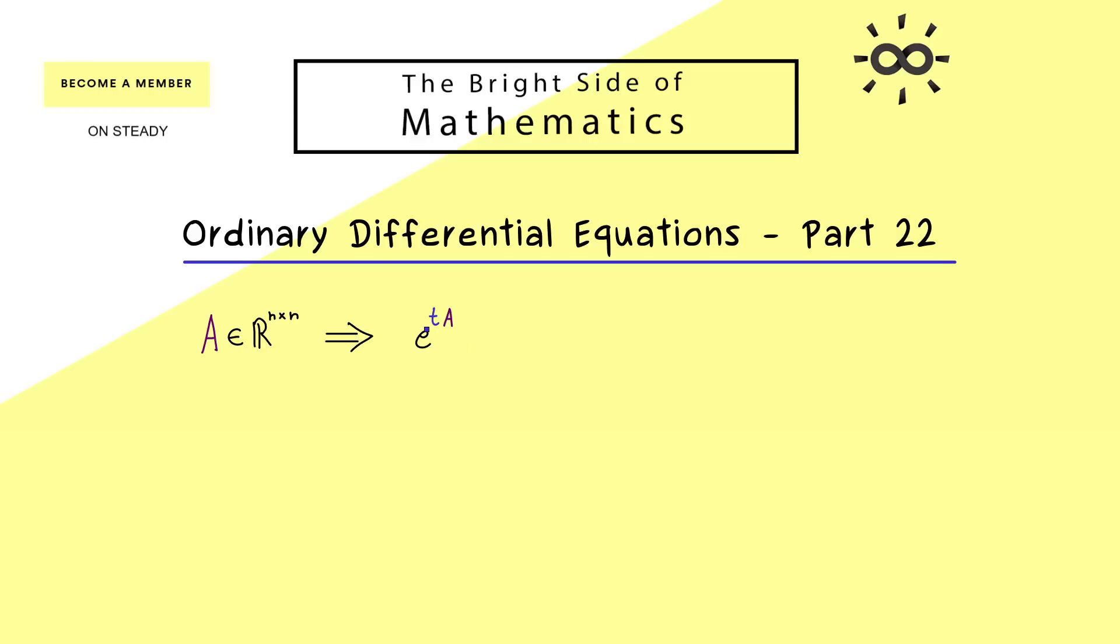Then for every real number t we can define e to the power tA, which is a square matrix again. In particular we have exactly n columns and these span our solution space. Indeed we have discussed that a lot, it's the solution space of the homogeneous system. And as you know we always write it as x dot is equal to Ax. Now it's really important to remember finding the solution set of this ODE is just calculating e to the power tA.